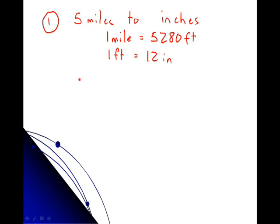So, we can set this problem up. We always start by putting down our original measurement, 5 miles. And we're going to use conversion factors, first of all, to make the mile disappear, and the feet to be our new unit. Then, after that, we will use the next conversion factor to make feet disappear, and inches be our final unit.